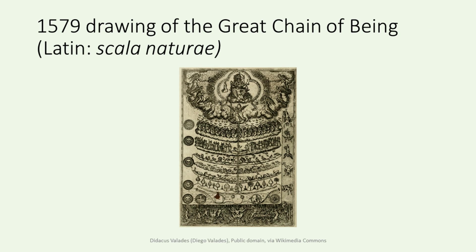One of Aristotle's most notable contributions to taxonomy was his system of classification based on the ladder of life, often referred to as the Scala Naturae, or the Great Chain of Being. In this hierarchical system, organisms were arranged from simplest to most complex, with humans occupying the pinnacle due to their perceived superior intellectual abilities. While Aristotle's taxonomy was groundbreaking for its time, it was not without its shortcomings — his system lacked rigorous classification criteria, and his classifications often reflected the philosophical beliefs of his era rather than strictly empirical observations. Nevertheless, his emphasis on observation, systematic categorization, and the interconnectedness of life provided a solid foundation upon which the edifice of modern taxonomy would be built.